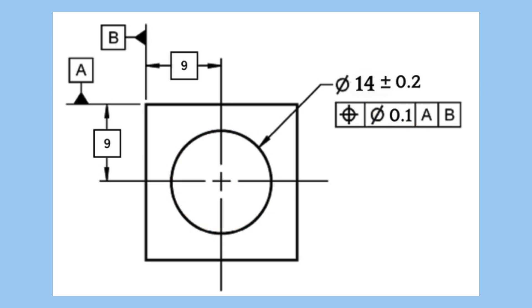True position is the exact theoretical location of a feature. It represents the perfect location that the feature should ideally have. In this example, it is 9mm in X and Y away from the corner. To summarize, true position represents the target location, and position tolerance indicates the acceptable deviation from this target.